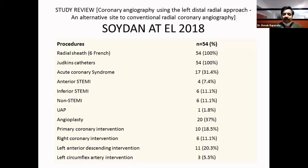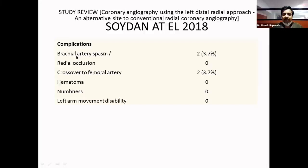Looking at international data: data by Soydan et al. in 2018 used a six-French sheath in 54 patients. The complication rate of radial artery spasm was 3.7% — only two patients out of 56 developed radial artery spasm. Radial artery occlusion: zero patients. Crossover to femoral artery was only in two patients. Hematoma, numbness, and left arm movement disability was in zero patients. They used the left dorsal radial artery.